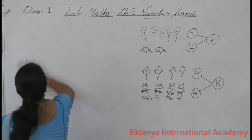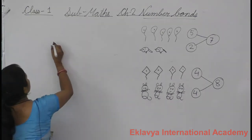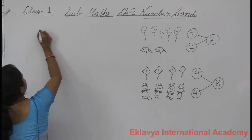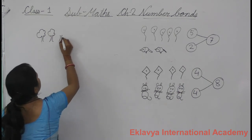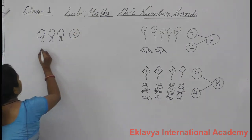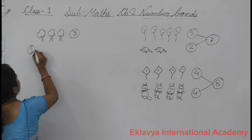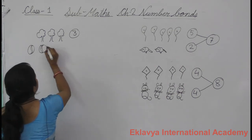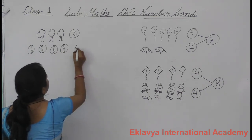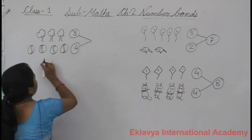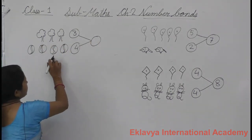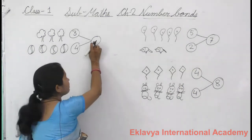I am giving work in your notebook. Three trees. Four balls. Count and put the number: one, two, three, four, five, six, seven. So put the number seven.